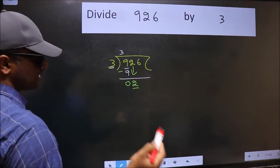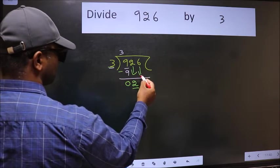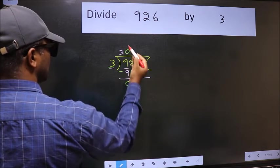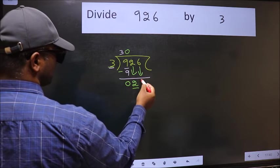So we should bring down the second number. And the rule to bring down the second number is, we should put 0 here. Then only we can bring this number down.